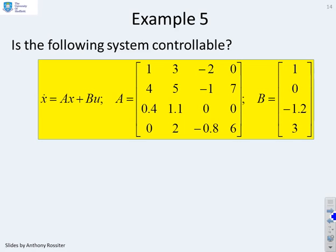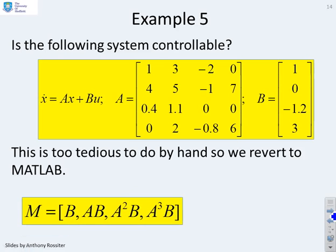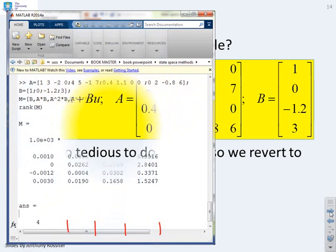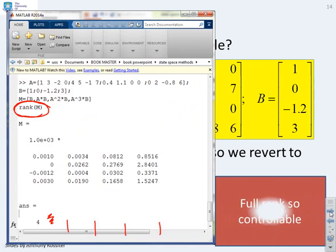Now, final question, is the following system controllable? Now, this is clearly far too tedious to do by hand, so we can use MATLAB. And this one, because we've got four states, you'll notice we've got a B, an AB, an A²B, and an A³B. And there's the answer. And you'll notice in this particular case, what I've done, because it's getting rather messy, I've said let's use the rank statement in MATLAB. And this has come back and told me that the rank is four. So it's full rank, and therefore the system is controllable.